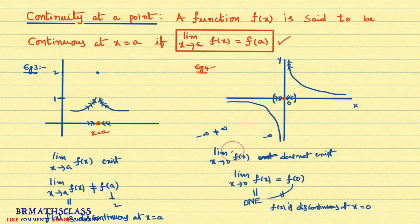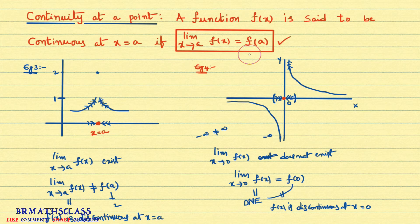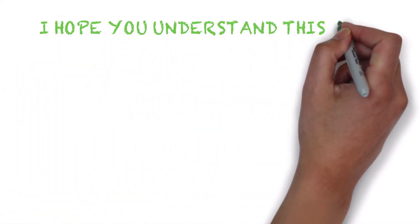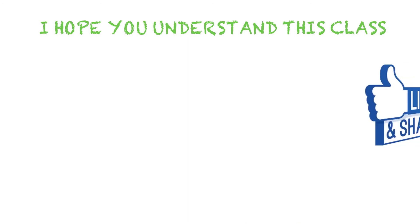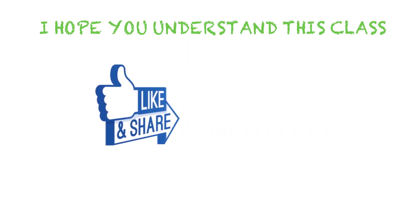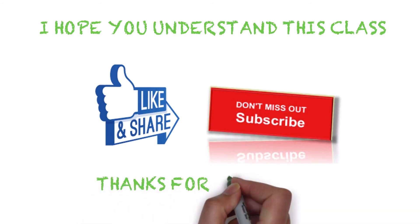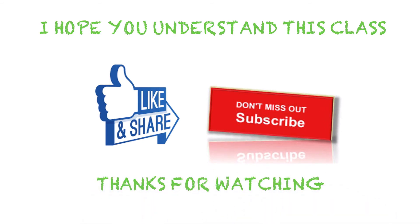Finally, what I want to say: when we say the function is continuous at x equal to a, it means if limit x tends to a of f(x) equals f(a), then the function is continuous at x equal to a. I hope you understand this class. If you like this video, please share it with your friends. If you are not yet subscribed to my YouTube channel, subscribe now. Thanks for watching. Have a great day. Bye bye.